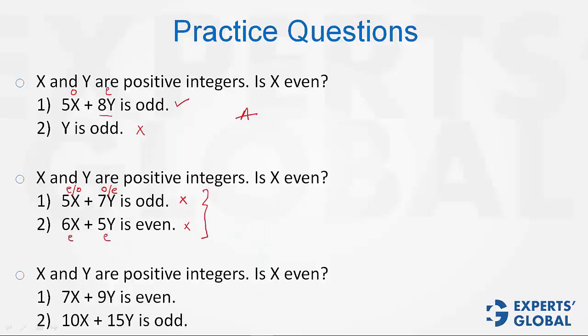On combining, what do we get? On combining, we know that 5Y is even, therefore Y is even, and therefore 7Y is going to be even. If 7Y is even, 5X has to be odd, and therefore X is odd. So on combining, we get no, X is not even, X is odd. Remember, no can also be an answer. Combining helped, and therefore C is the correct answer choice.